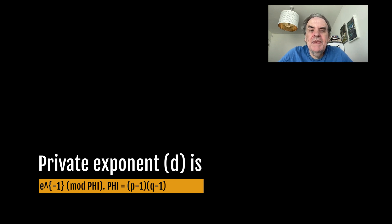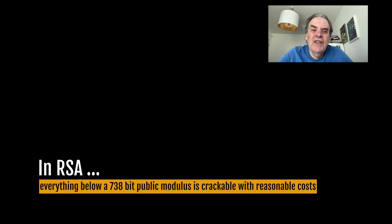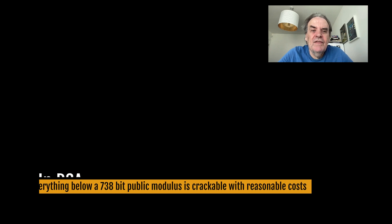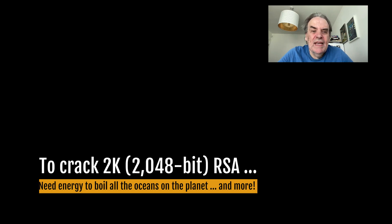If we can determine p and q we can easily determine phi and thus crack the private key. Anything below a 738-bit public modulus is relatively inexpensive to crack for RSA. To crack 2048-bit RSA at the current time you would need to boil every ocean on the planet to break it.